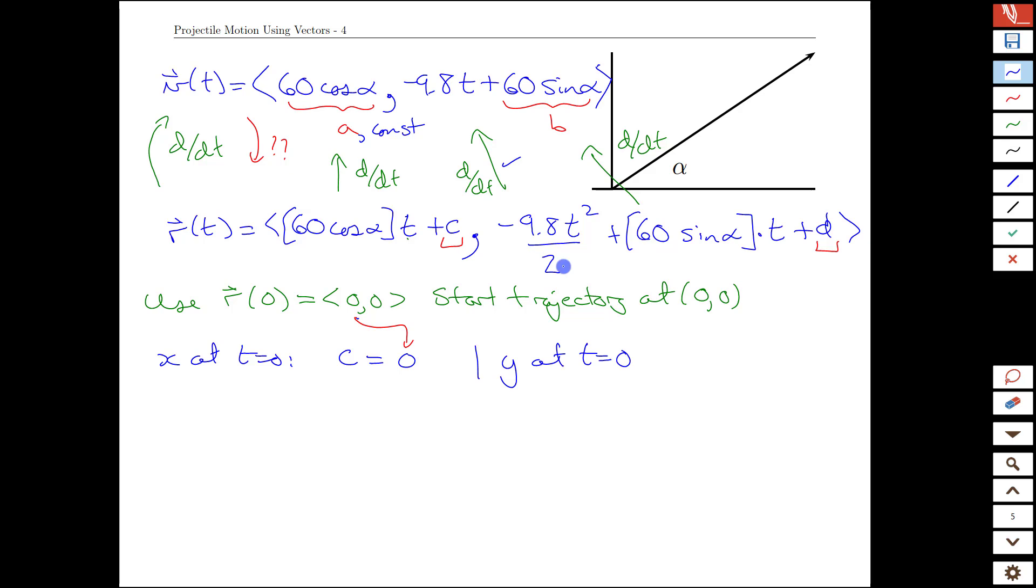How about y at time zero? Well, it's going to be this term here, but that's t squared is zero. t here is zero times that. That's just d. The d has to equal our initial position in the y direction, but that's a zero too. Ah, fantastic.